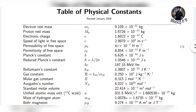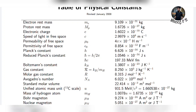Speed of light in free space. Also, mu-zero and epsilon — the permeability and permittivity of free space. Mu-zero value is 4π × 10 to the power of minus 7. Epsilon value is 8.854 × 10 to the power of minus 12 farads per meter.